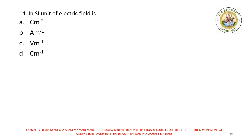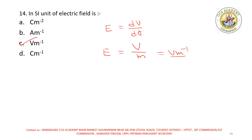Next question: the SI unit of electric field. Options: Newton per square meter, ampere meter per meter, volt per meter, coulomb per meter. Option C is correct — volt per meter. Electric field intensity E = dV/dr, where dV is potential (volts) and dr is distance (meters). Also E = force per unit charge.